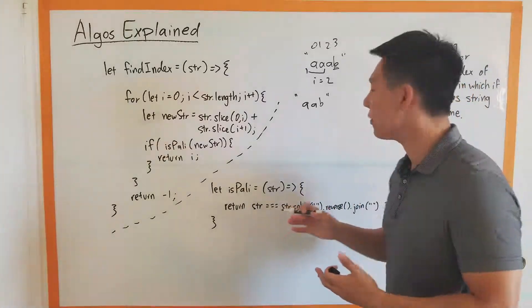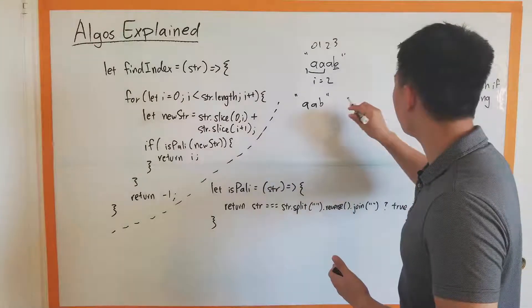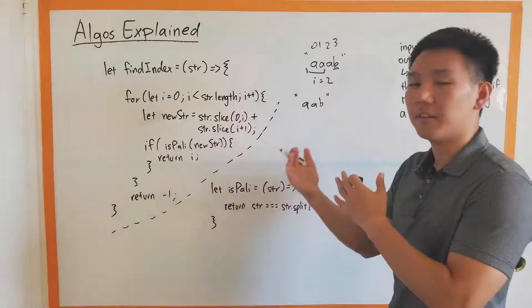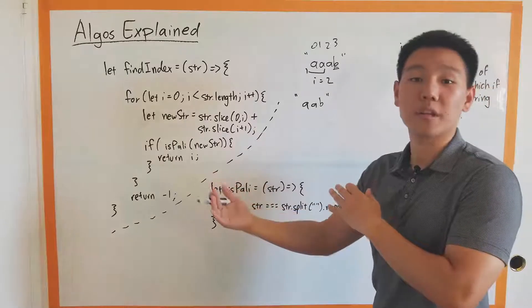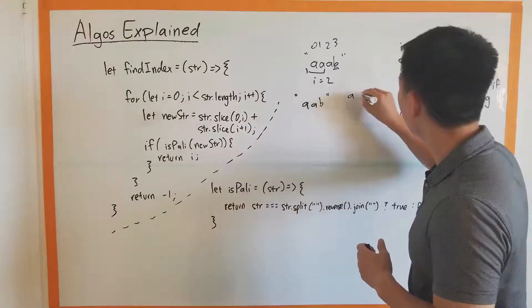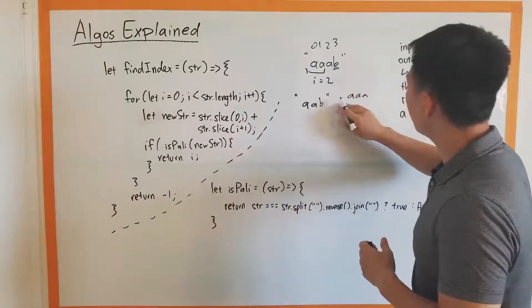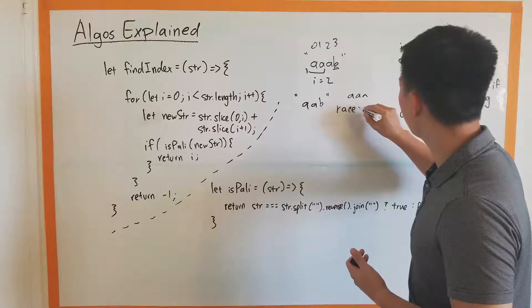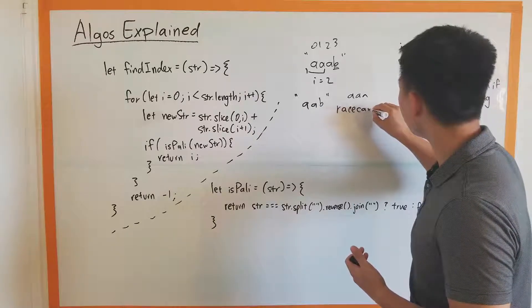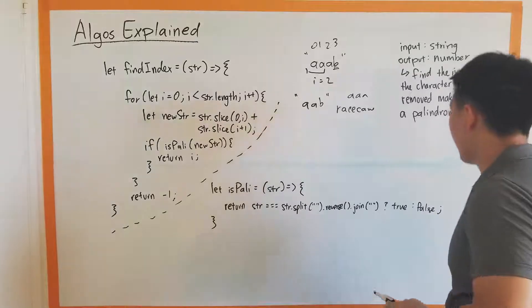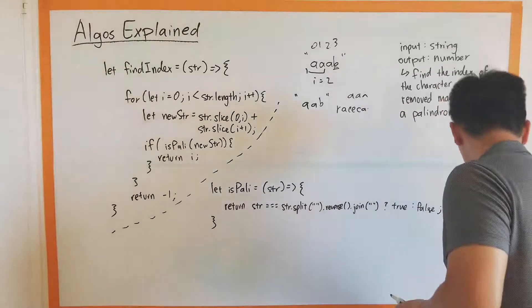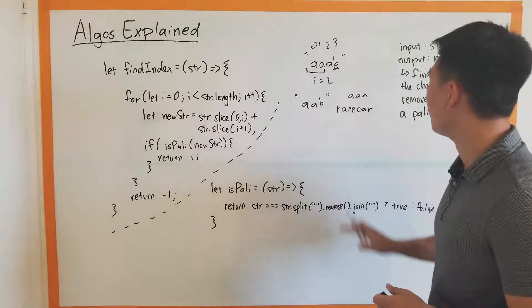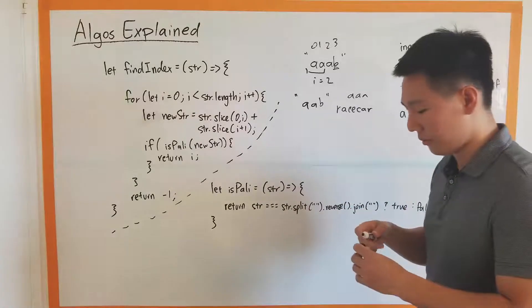A palindrome is a string that is the same forwards and backwards. Triple A spells the same backwards — same idea as 'racecar.' If you flip it and spell it the other way, it's the same. That's a palindrome.